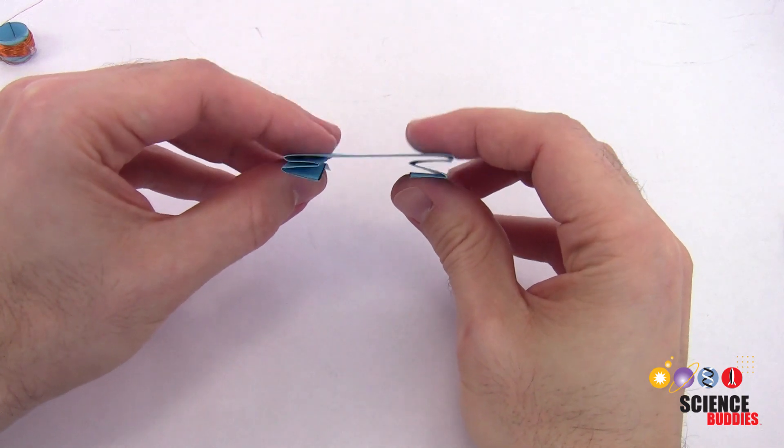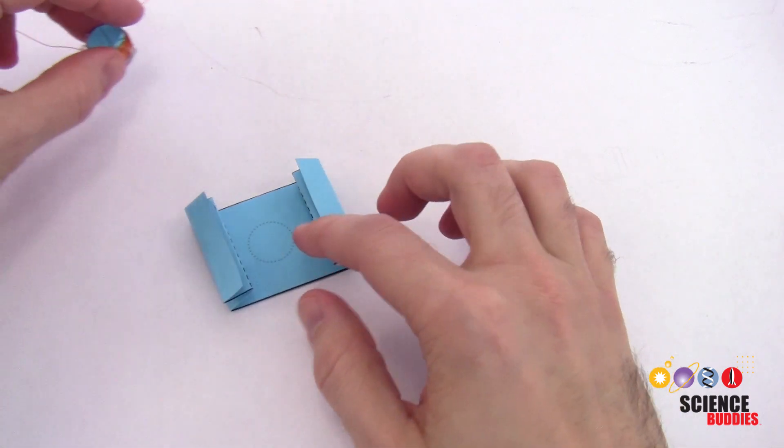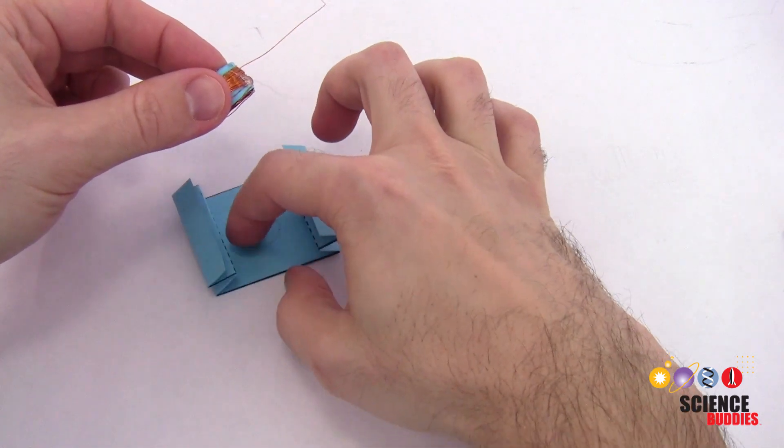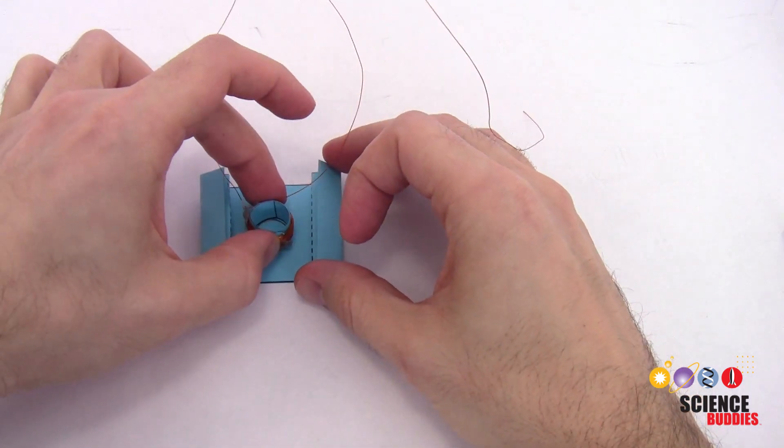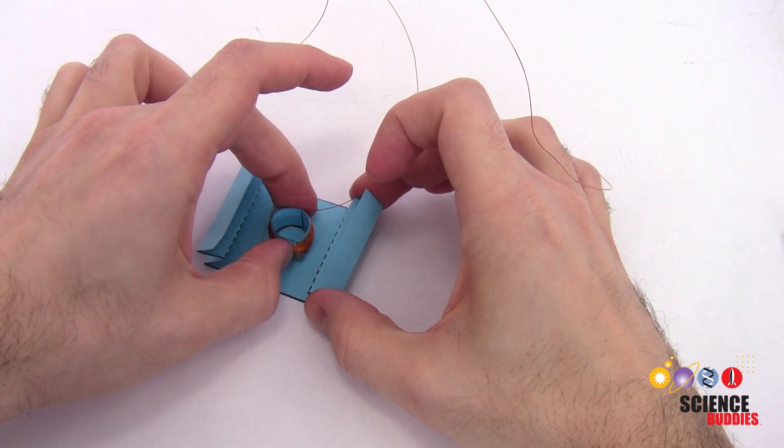So what you're going to do next then is carefully make sure you don't gunk up the accordion part. Take your coil, and with a little circle of glue, glue your coil wire onto that circle. And then we're going to flip this whole thing upside down and attach the cone—actually, before we attach the cone, we are going to attach this to the base.